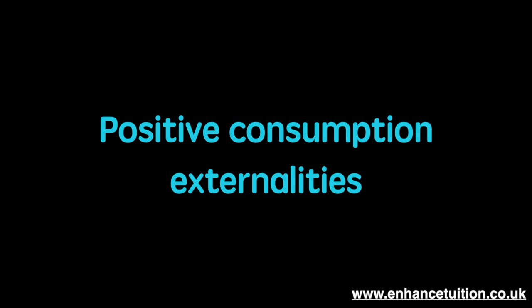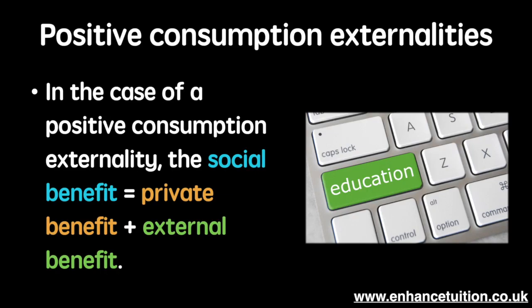Let's first consider the case of positive consumption externalities. With positive consumption externalities, the social benefit equals the private benefit plus the external benefit. The social benefit represents the benefit to society as a whole. The private benefit is the benefit received by the individual consuming the good or service, and the external benefit, or the externality, is the benefit to a third party not involved in the transaction.